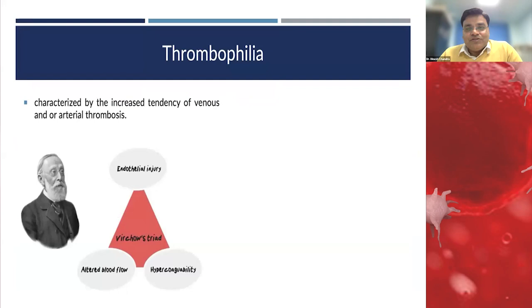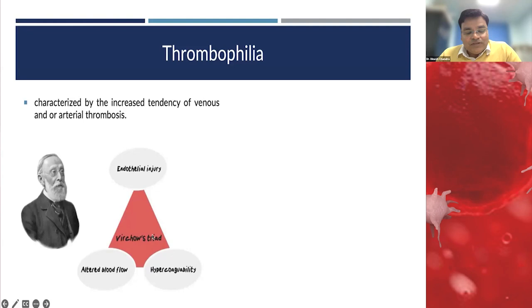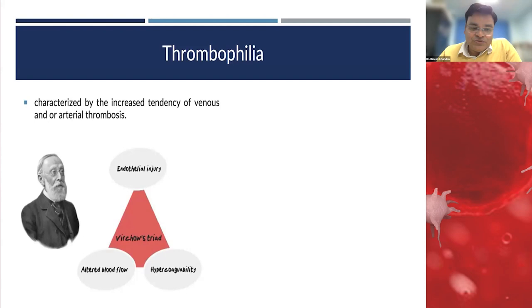Thrombophilia is characterized by an increased tendency of venous or arterial thrombosis. Virchow's triad describes three factors: hypercoagulability, alteration in blood flow — either slowing or stasis — and endothelial injury or dysfunction, which together create conditions favorable for thrombosis.